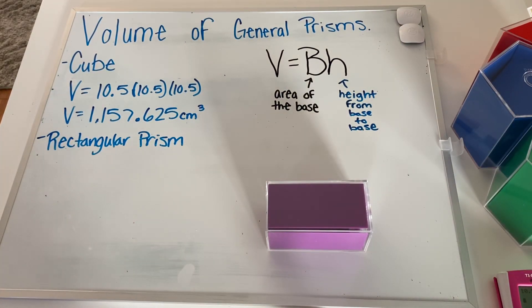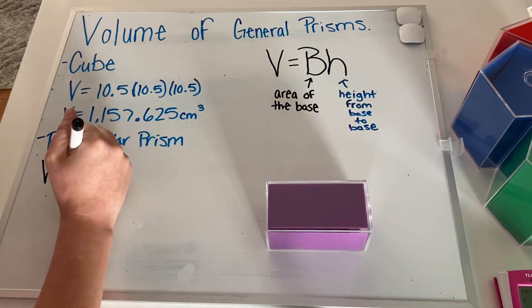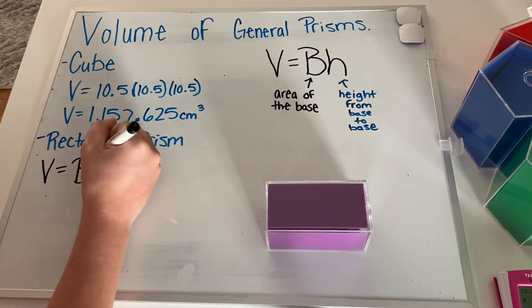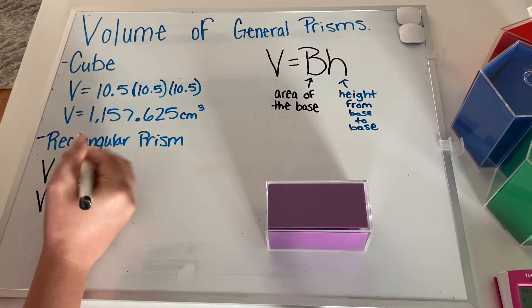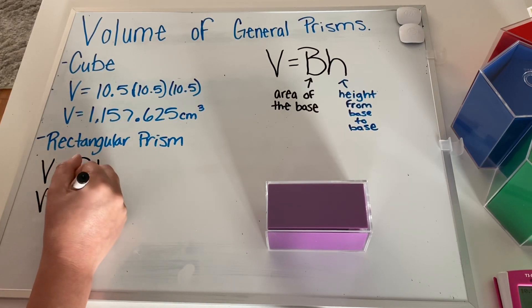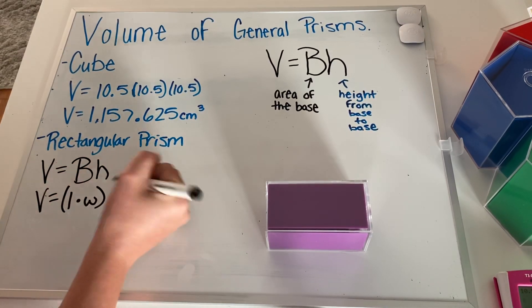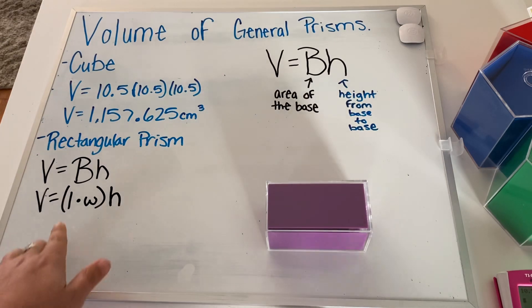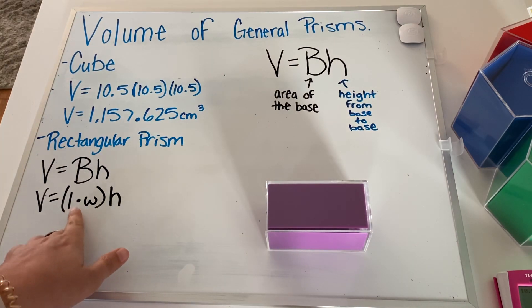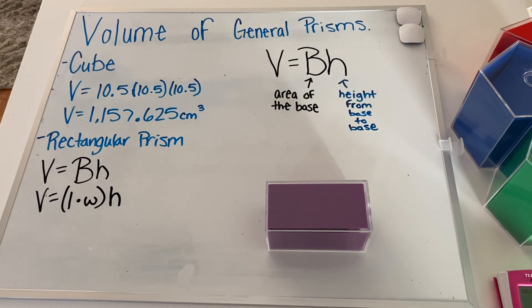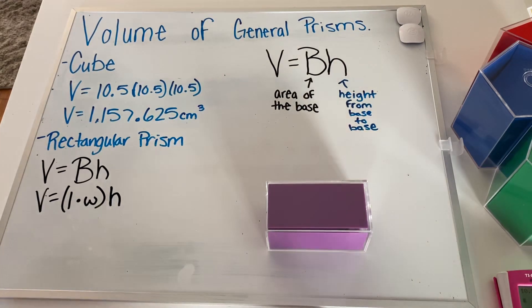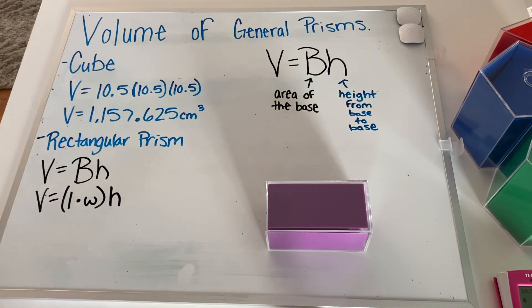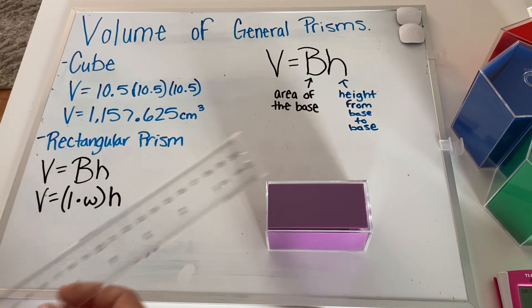We are going to find the area of a rectangle. How do we find the area of a rectangle? Area equals the length times the width. So the volume equals big B times H — we have to do the area, which is the length times the width, and then multiply it by the height. And if you recall from 6th grade, length times width times height — that is where they came up with that formula to easily memorize, instead of volume equals big B times H.